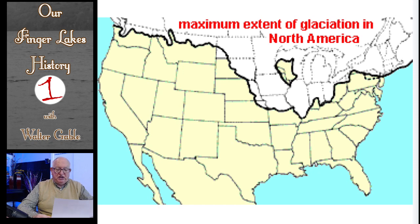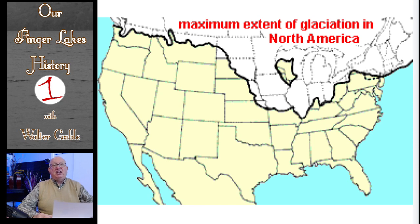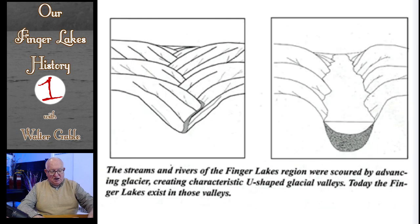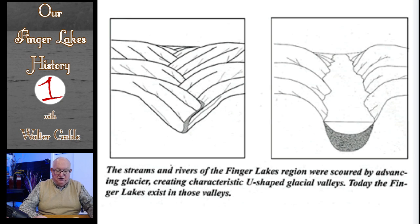The last Ice Age retreated from New York about 10,000 years ago. These glaciers were more than one mile deep of ice, obviously creating enormous weight and pressure at the bottom of these ice sheets. So as these glaciers moved, they scoured the underlying surface, including rock, and gouged river valleys into deep troughs. As these advancing glaciers proceeded south, running parallel to the V-shaped valleys of rivers running north-south in the present Finger Lakes region, as shown in the visual at the left, the river valleys were carved into deep U-shaped troughs, as shown in the visual at the right.